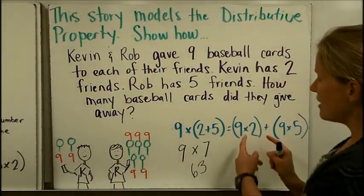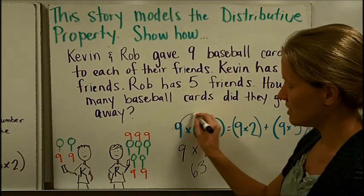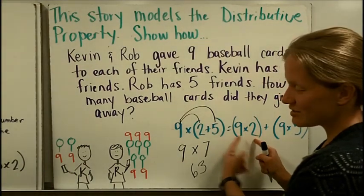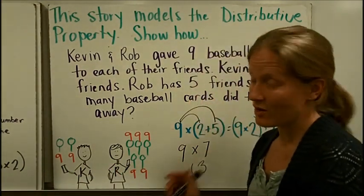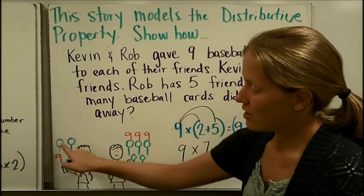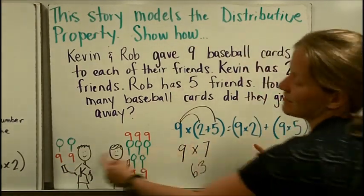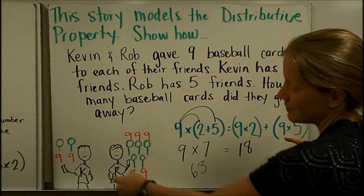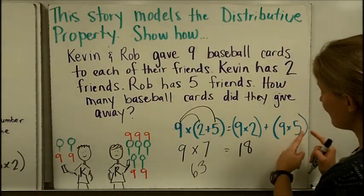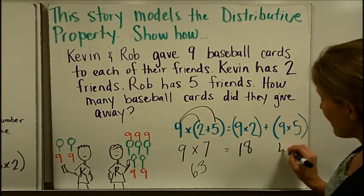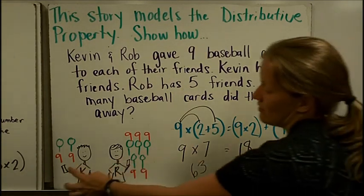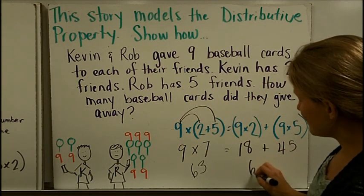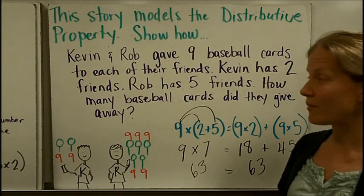We could multiply 9 times 2. See how we're distributing this 9 times the 2 and distributing this 9 over the 5? We could find out the 9 times the 2 represents Kevin's number of baseball cards that he's giving away because he has 9 cards given to each of his 2 friends. So he's going to give away a total of 18 cards. And then we could do Rob's total number of cards that he's giving away. He's got 5 friends, and he's giving each one of them 9. So that would be 45. Then if we know that Kevin's giving away 18, Rob is giving away 45, if we add them together, we will get 63, and we will see that the distributive property does work.